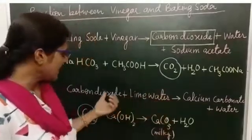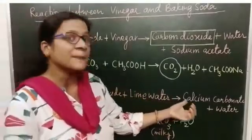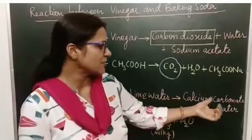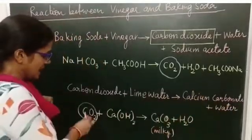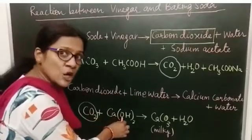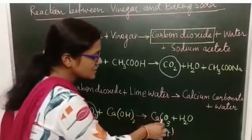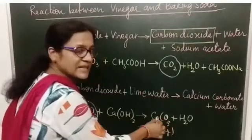When carbon dioxide gas passes through lime water, it appears milky due to the formation of calcium carbonate. In the chemical equation, carbon dioxide reacting with calcium hydroxide forms calcium carbonate, which appears milky, and water.